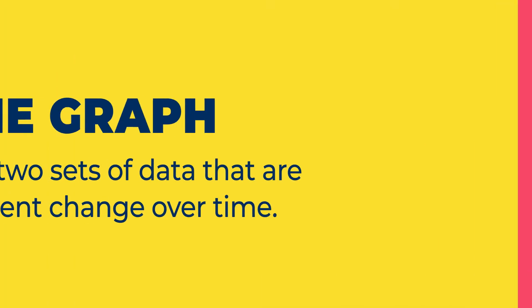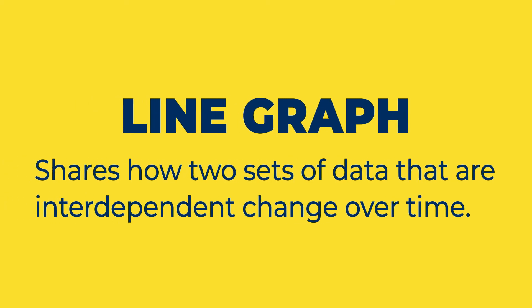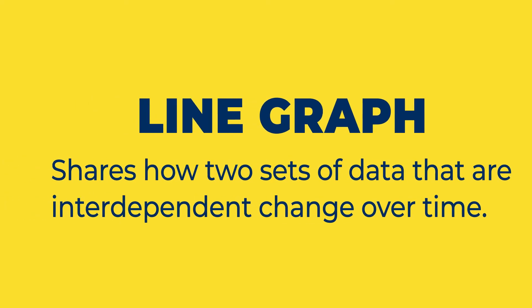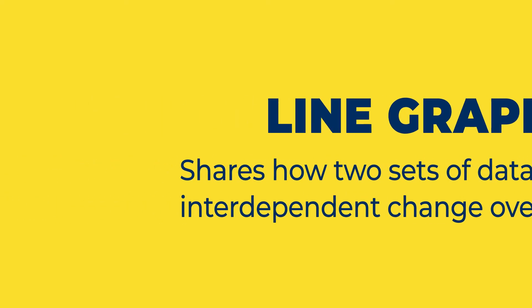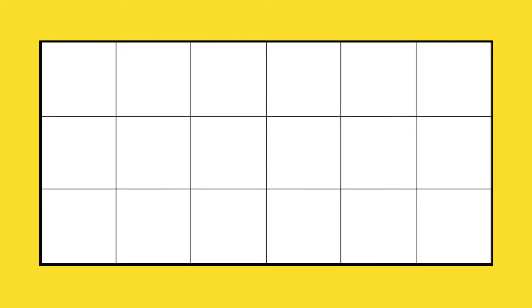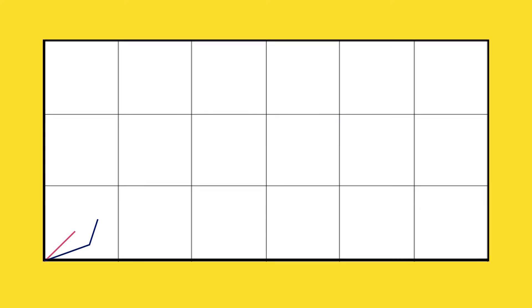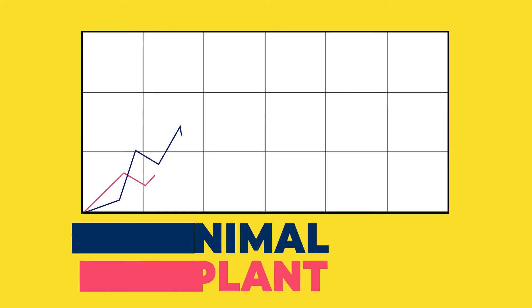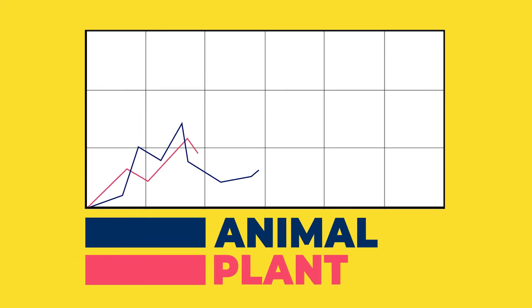A line graph usually shares how two sets of data that are interdependent change over time. For example, if a scientist wants to show how plant and animal populations both changed over the course of time, they would be likely to use a line graph.